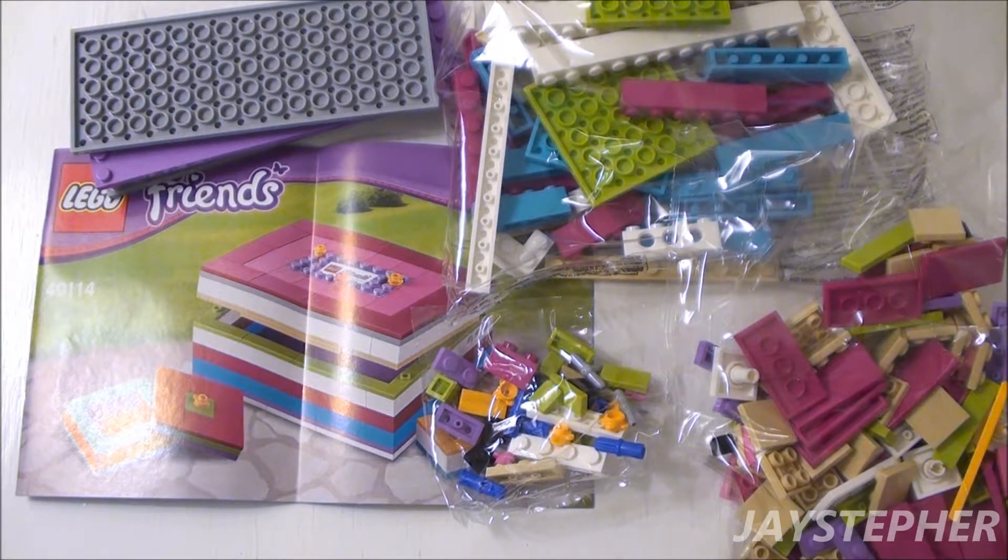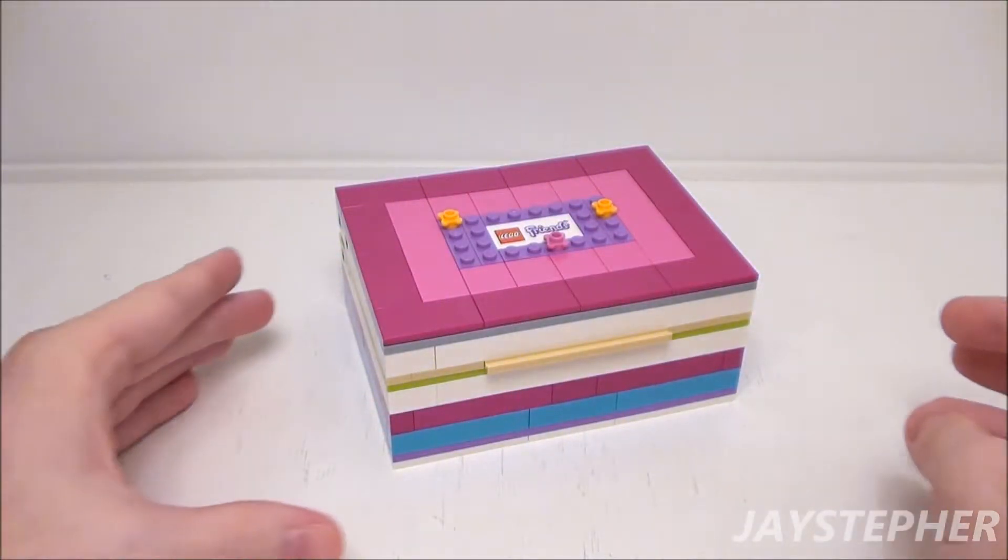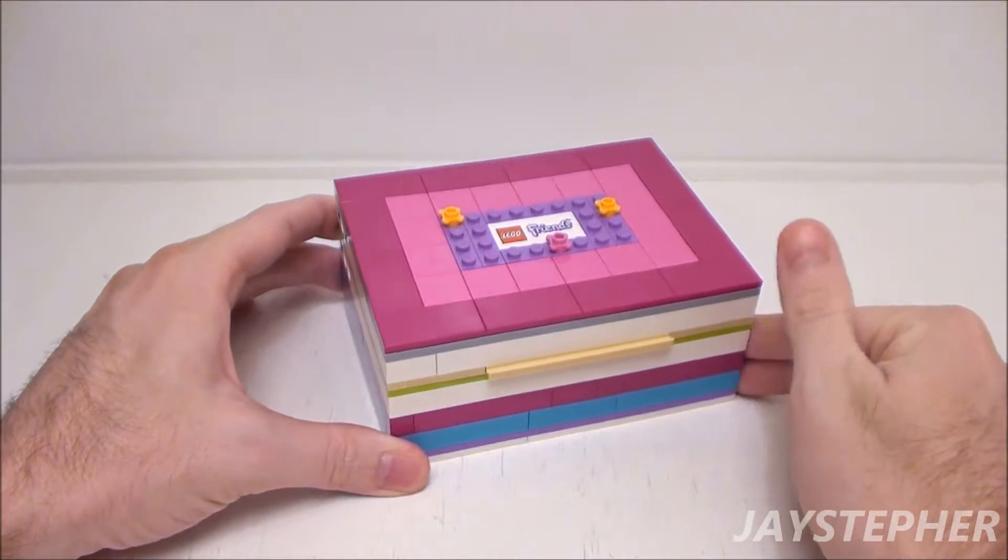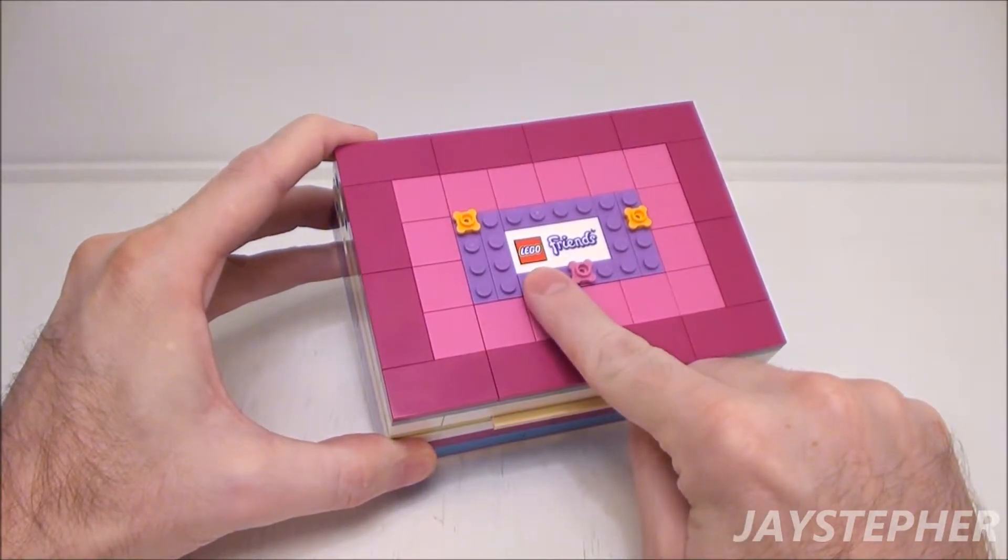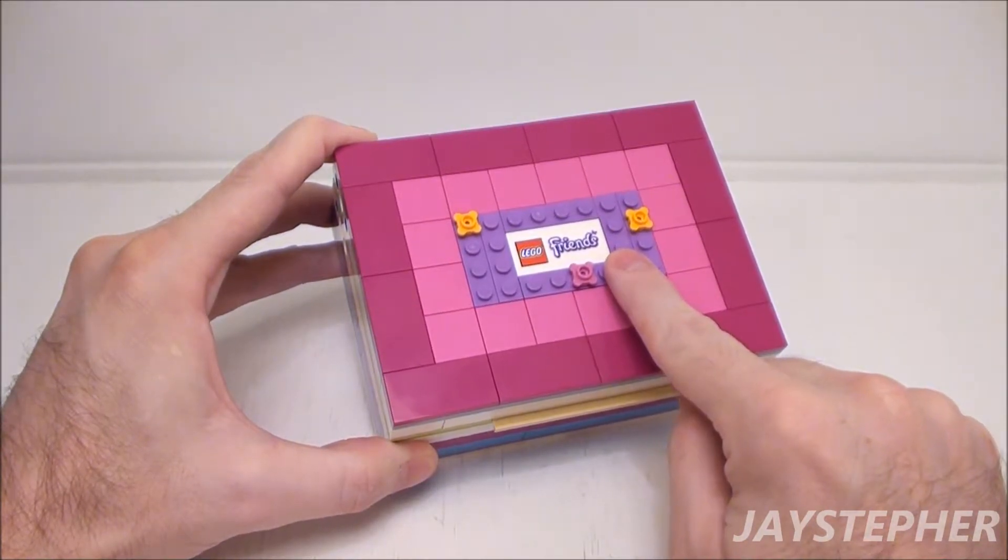Let's take a closer look at the jewelry box. On the top there is a 2 by 4 tile that says Lego Friends. That is printed.